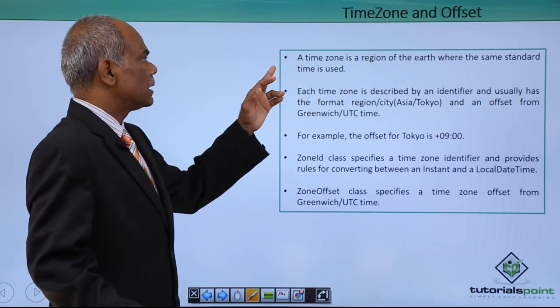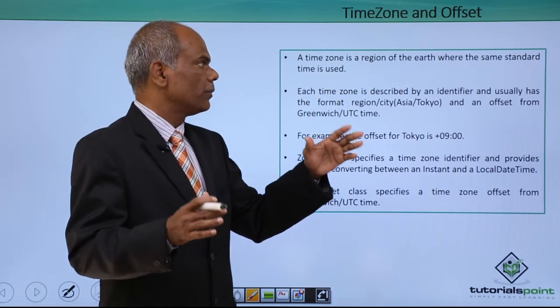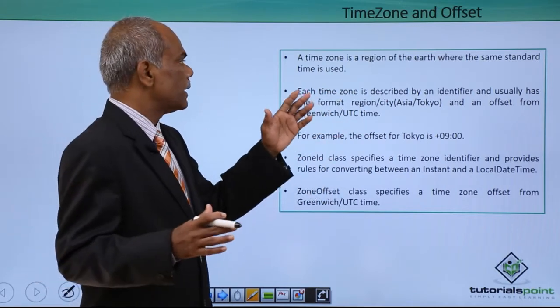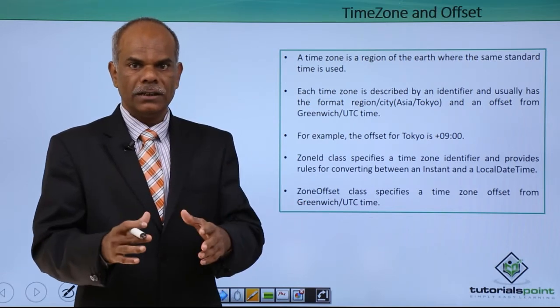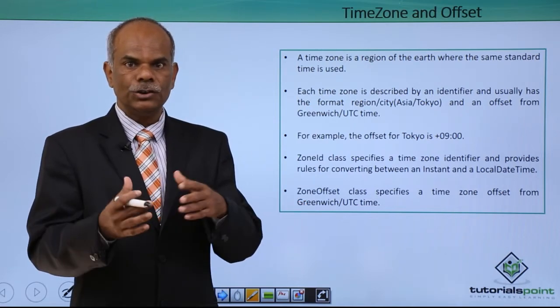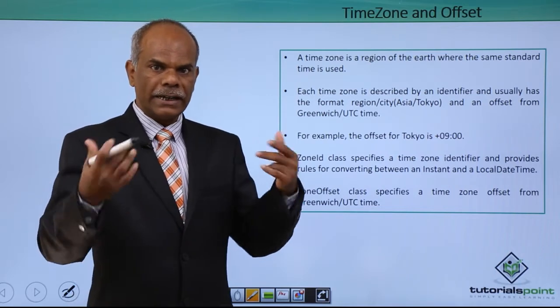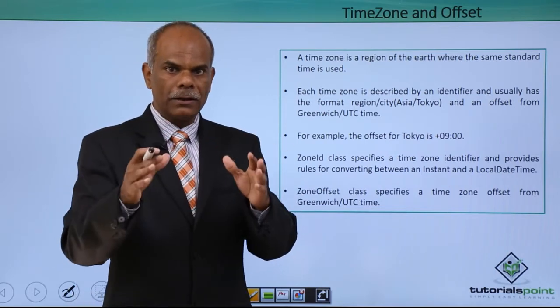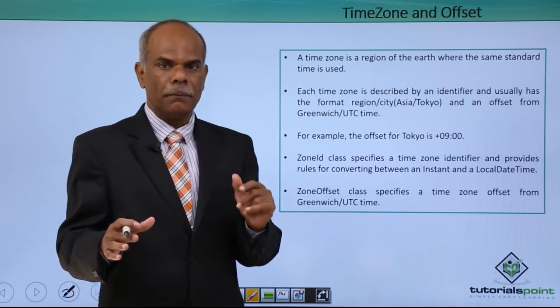Time zone and offset. The time zone is a region on the earth where a particular standard time is used. For example, IST, the time zone IST is used in India. To standardize the time in a particular zone, in a particular region on the earth, the time zones are marked out.